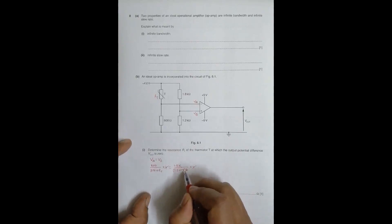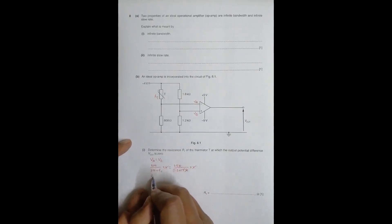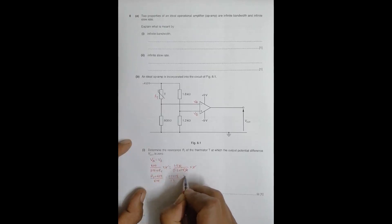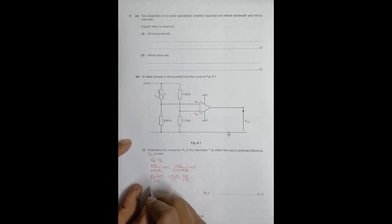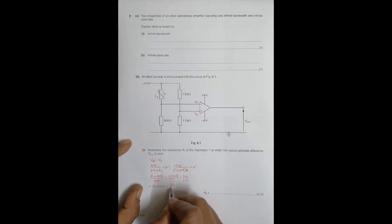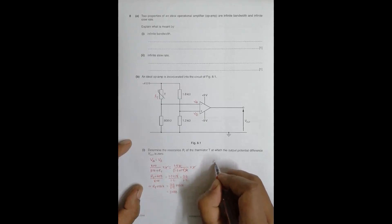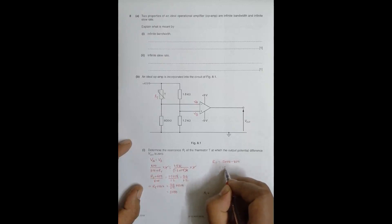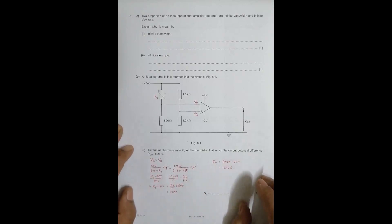Rearranging: (RT + 800) divided by 800 equals (1.2 + 1.8) divided by 1.2, which is 3.0 divided by 1.2. Therefore RT + 800 equals (3.0 / 1.2) × 800 = 2000. So RT equals 2000 minus 800, giving RT = 1200 ohms.